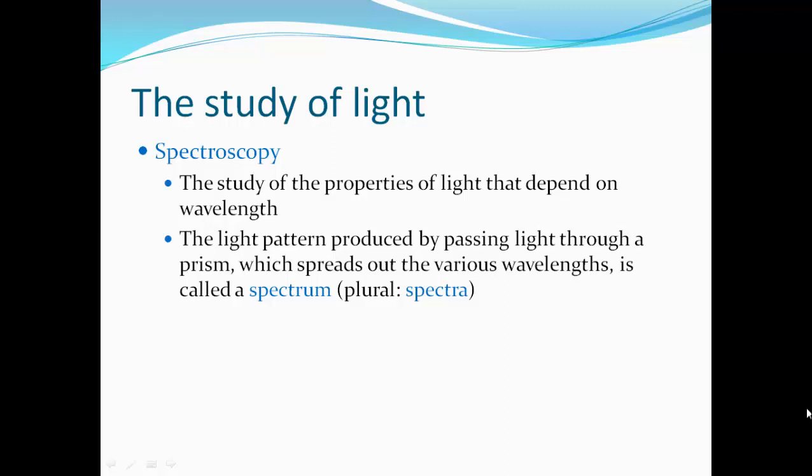Spectroscopy is the study of properties of light that depend on wavelength. The light pattern is produced by passing light through a prism, which spreads out various wavelengths. It's called a spectrum, and plural spectrums are called spectra.